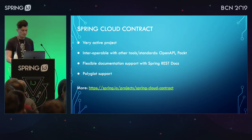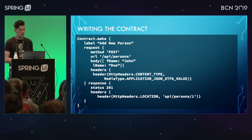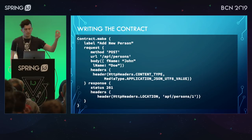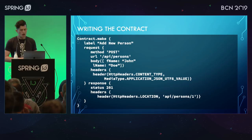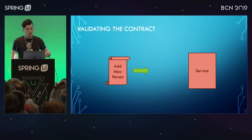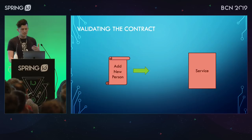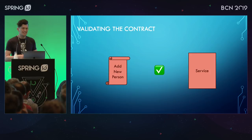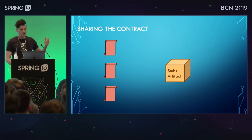Initially, when Spring Cloud Contract was first released, you were writing contracts in Groovy. Here's what a very simple contract would look like — imagining you're calling some person service, adding a new one, and getting a 201 response back with a header showing where that location should be. It defines a request — a POST to this URI with content — and then what the response should look like given that request. You can run it against the service to see: given this, does it actually respond this way? You'd have a bunch of different contracts explaining how to use your service, what happens when things go good, and when things go bad.